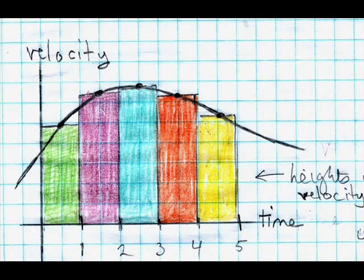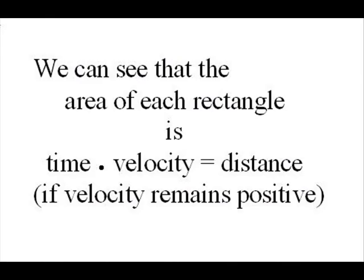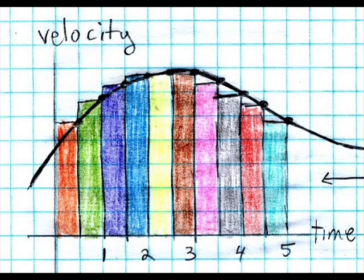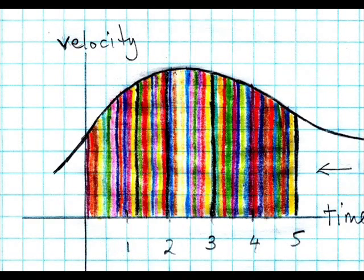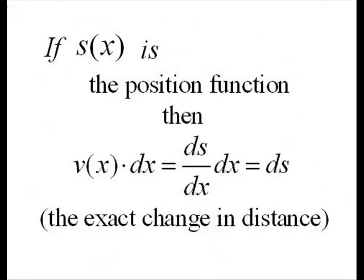To find the area under the curve of a rectangular function, this is your function. Set up an integral from A to B, and if F is positive, the area will be — you will get the displacement, even if F is negative. But if you want the total area, take the absolute value.